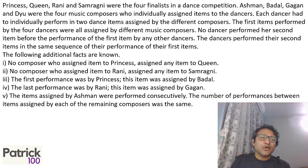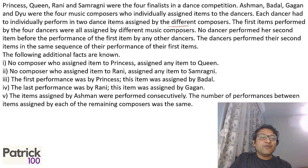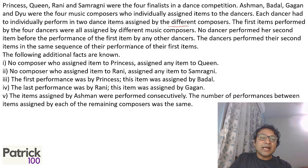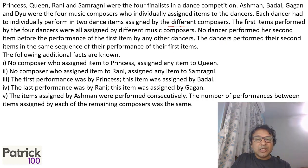Ashman, Bartle, Gagan, and Diyu were the four music composers who individually assigned items to the dancers. Each dancer had to individually perform on two dance items assigned by different composers. The first item performed by the four dancers were all assigned by different music composers. No dancer performed a second item before the performance of the first item — so all first four performed, and then they repeated the four. The dancers performed their second item in the same sequence as the first.